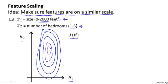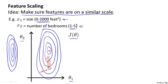And if you run gradient descent on this sort of cost function, your gradients may end up taking a long time and can oscillate back and forth, and it can take a long time before it can finally find its way to the global minimum. If these contours were exaggerated even more, incredibly skinny, tall contours, gradient descent will have a much harder time meandering around. It can take a long time to find its way to the global minimum.